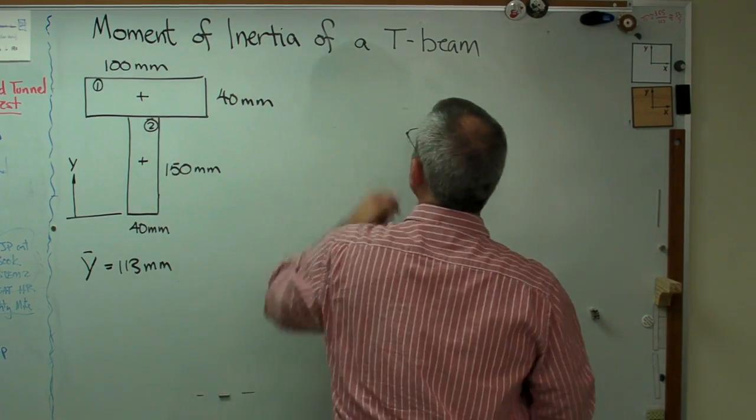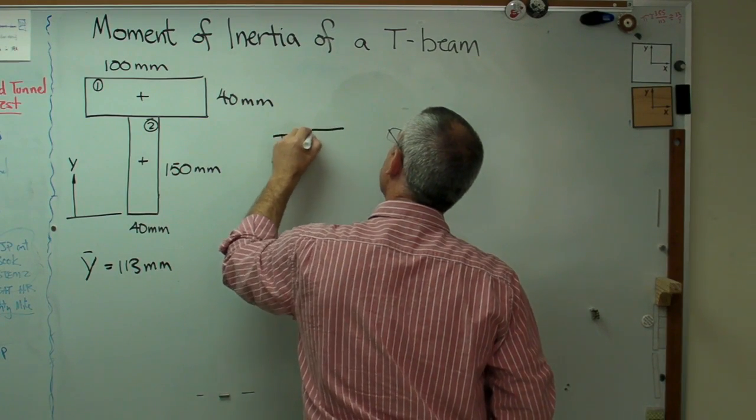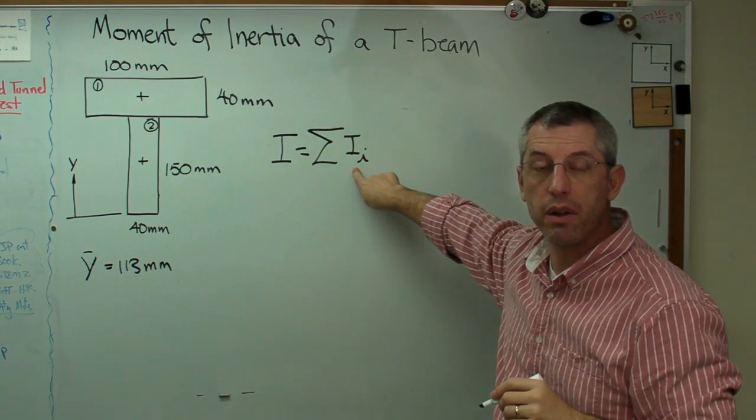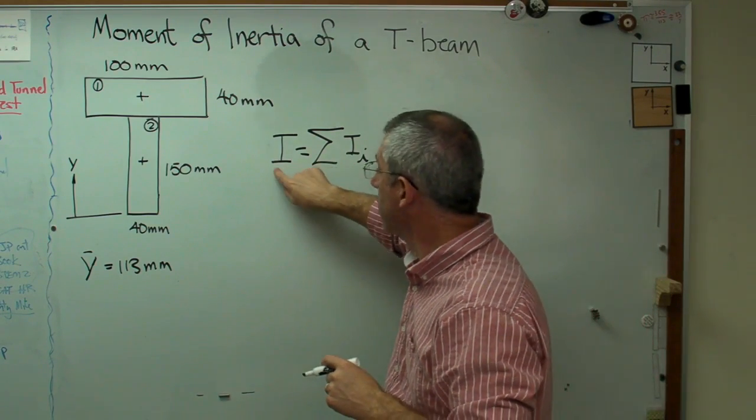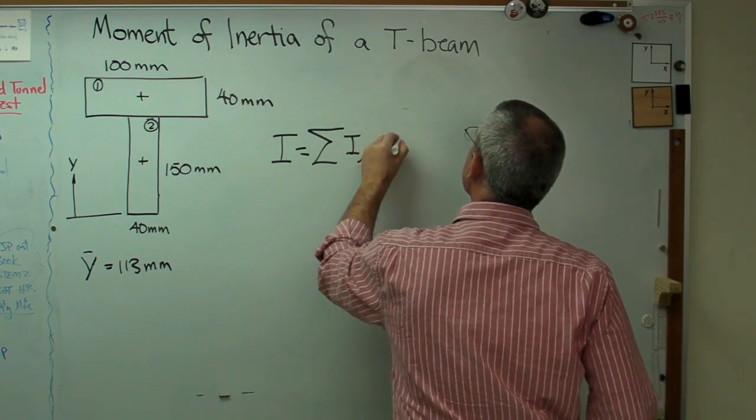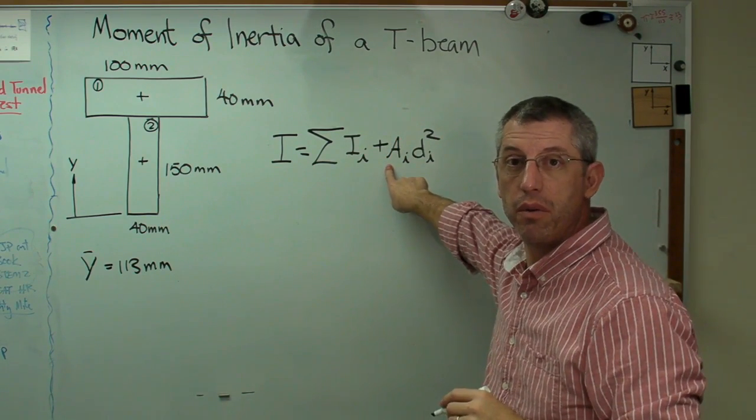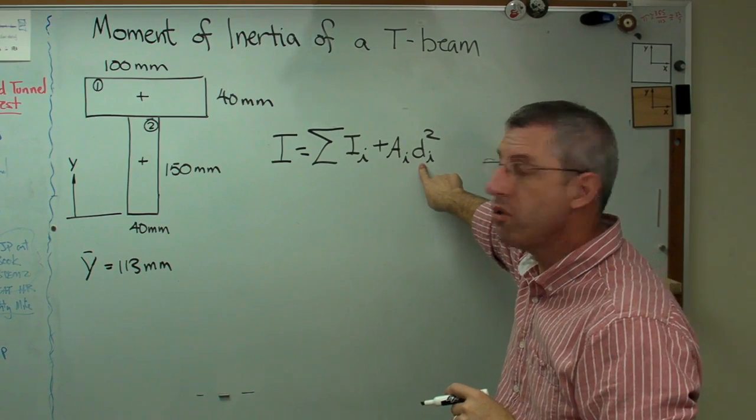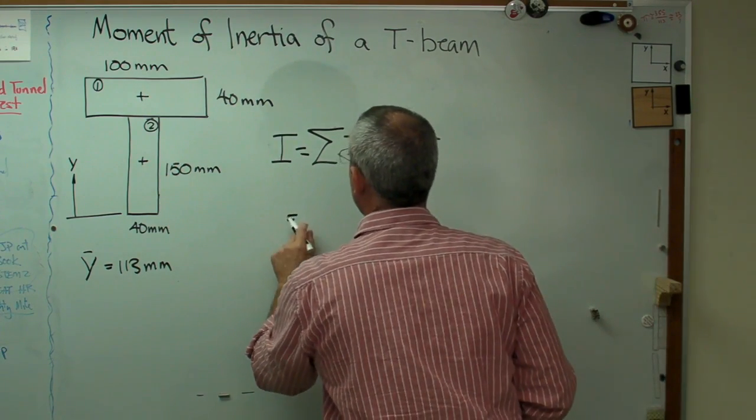And what that looks like is we'll write I equals the summation of I sub i. Now, I sub i means that's the area moments of inertia of the individual shapes. This is the area moment of inertia of the entire shape. Plus A i d i squared where that's the area of each shape and that d is the distance of the centroid of my individual boxes from the centroid of the entire piece.